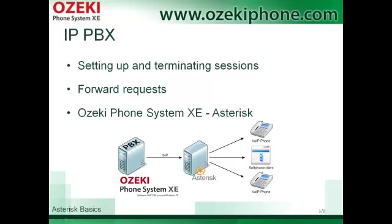The main task of an IP PBX is to forward a call request from a phone to another phone. It is also possible to connect these phone systems together. So if you have an old Asterisk system and you would like to connect your Azaki Phone System XC to it, it is possible by using a SIP trunk line.